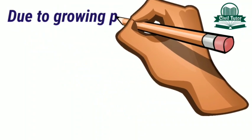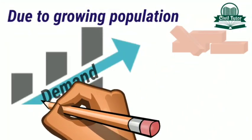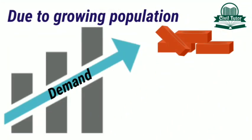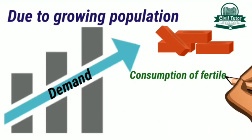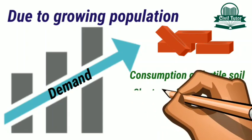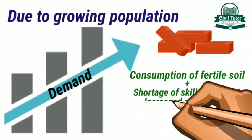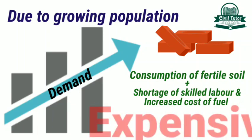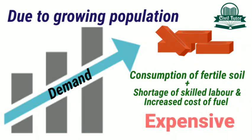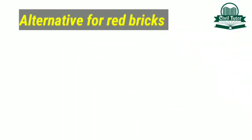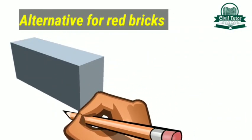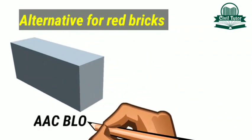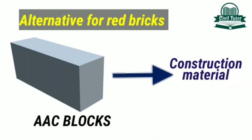However, due to the growing population, the demand for red bricks increased, which led to the drastic consumption of fertile soil. Plus the shortage of secondary labour and increasing cost of fuel makes red bricks even more expensive. That's why an alternative had to be found, which led to the use of AAC blocks as construction material.